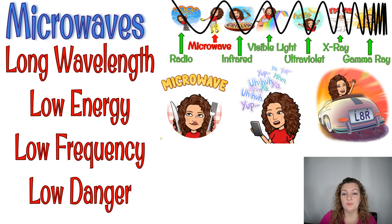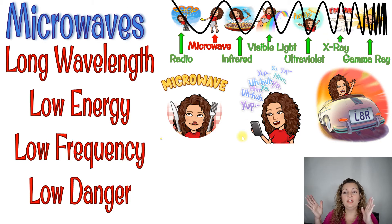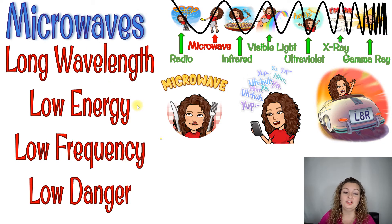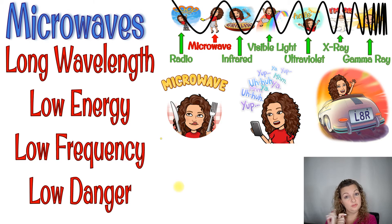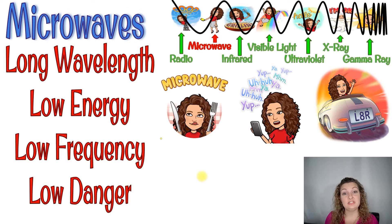Next up is microwave. As we move down the electromagnetic spectrum in this direction, we get shorter and shorter wavelengths. This is still considered a long wavelength, still low energy, still low frequency, and microwaves are pretty low danger as well. Microwaves are literally the microwaves in your microwave oven — that is what cooks and heats up your food. We also use microwaves to talk on our cell phones; microwaves are what's transmitting your voice back and forth. And policemen use microwaves to shoot radar at your car to see your speed and catch you for a speeding ticket.